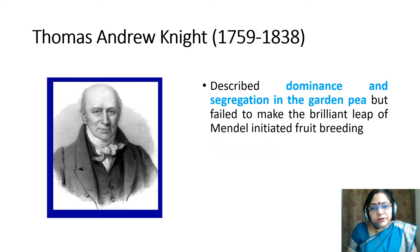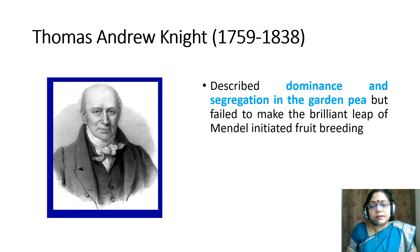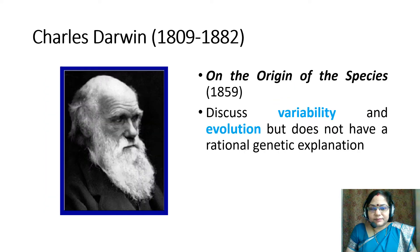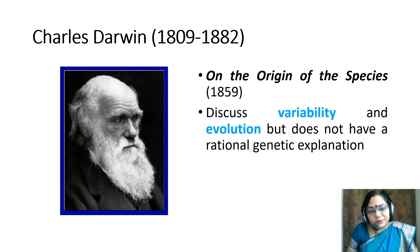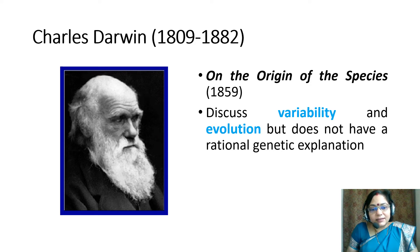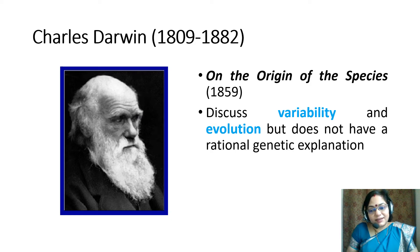Thomas Andrew Knight, from 1759 to 1838, described dominance and segregation in the garden pea. Charles Darwin, 1809 to 1882, wrote the book On the Origin of Species in 1859. He discussed variability and evolution and gave the concept of survival of the fittest. We utilize his variability and evolution concept in heterosis.